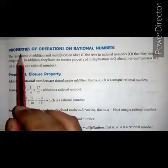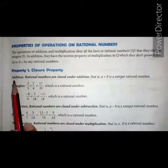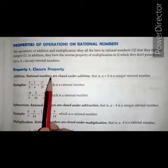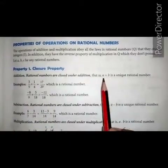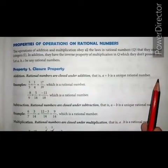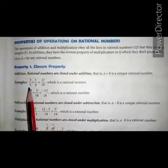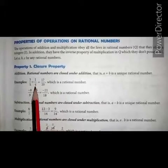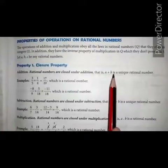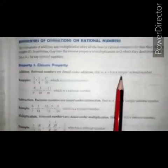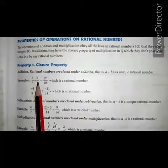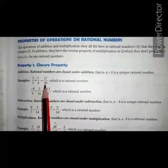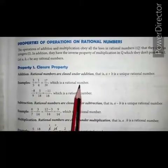In today's class, we discuss properties of operations on rational numbers. Property 1: closure property under addition. Rational numbers are closed under addition. That is, a plus b is a unique rational number. For example, 3 upon 5 plus 1 upon 4 equals to 17 upon 20. It means when we add 2 rational numbers, we get a rational number, and 17 upon 20 is also a rational number.